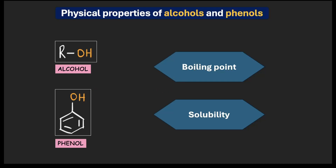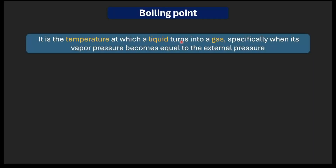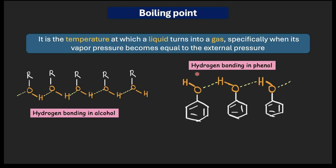Let's start with boiling point. Boiling point is the temperature at which a liquid turns into a gas — or more specifically, when its vapor pressure becomes equal to the external atmospheric pressure. Both alcohols and phenols have an OH group, which means they can both form hydrogen bonding with each other. The hydrogen atom bonded to a highly electronegative oxygen atom is attracted to the lone pair of electrons on the oxygen atom of a neighboring molecule.